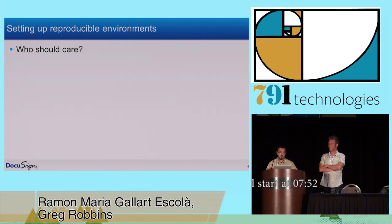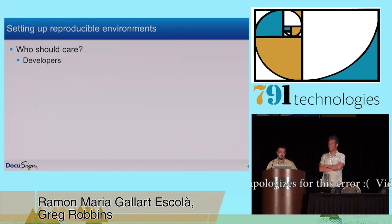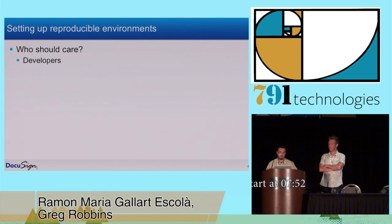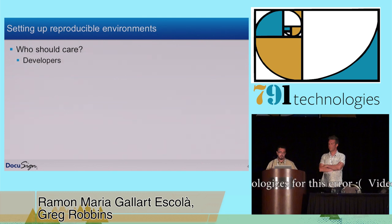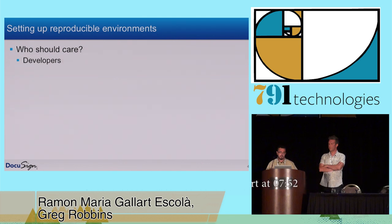So, talking about reproducible environments — who should care? Well, developers care. Developers write code that needs to run on some sort of environment. Developers usually want to write code. We like to write code. We don't like mucking about with environments. Well, I do, but I'm just kind of strange.